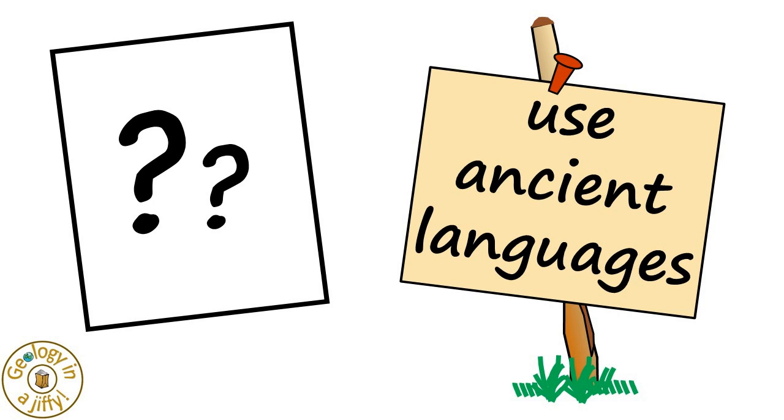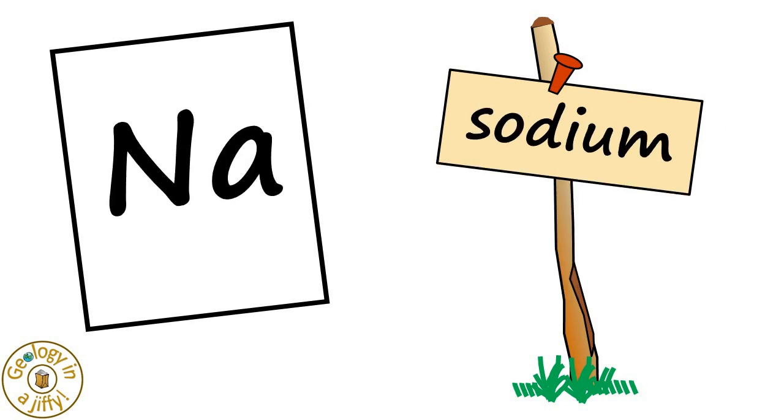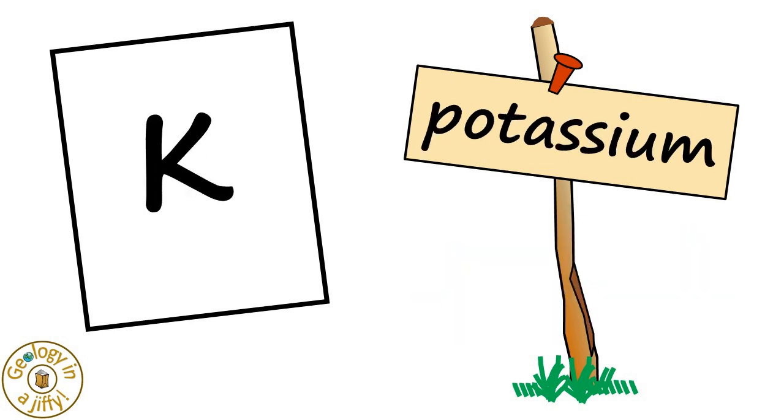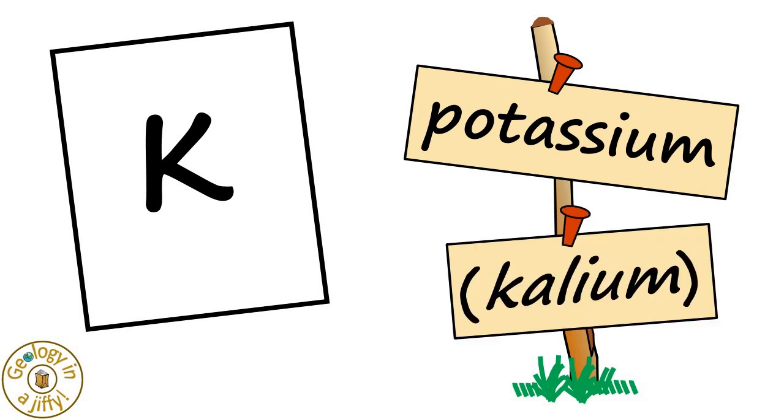All the elements could be linked to a name, or the ancient Latin or Greek names for the element. For example, NA is sodium, after the new Latin natrium. K is potassium, after the Neo-Latin calium.